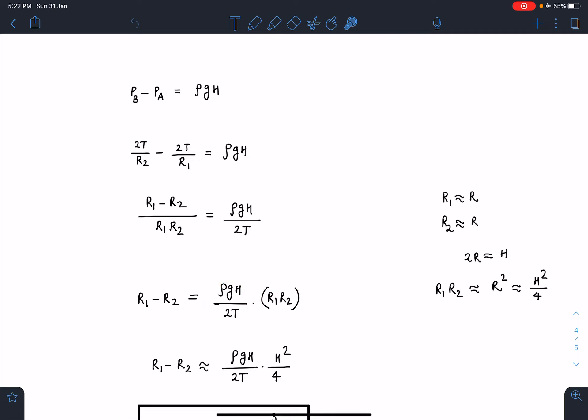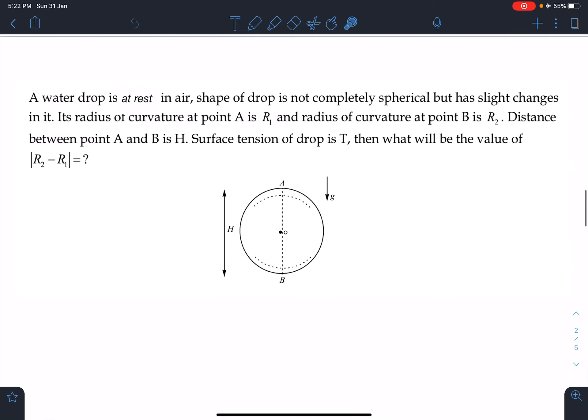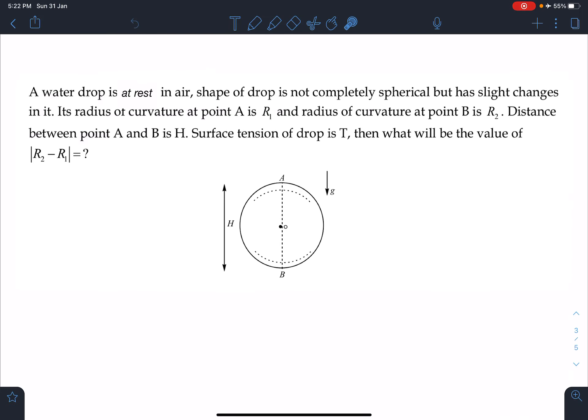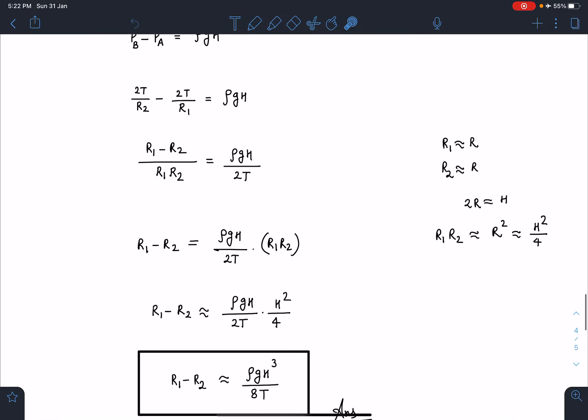Now I have to use approximation to eliminate R1·R2. If you see the language of this problem, it is not completely spherical but has slight changes. Under this assumption I can take R1 ≈ R and R2 ≈ R. If that is the case, R1 + R2 roughly equals H, or R1·R2 is roughly proportional to H²/4. This value of R1·R2 I am going to substitute in this equation.